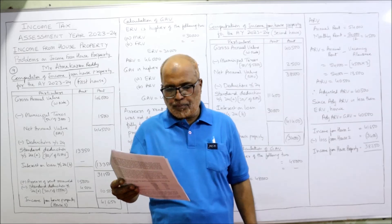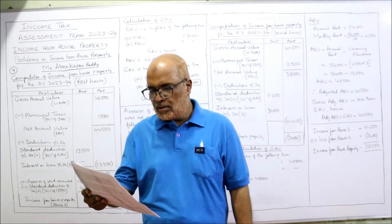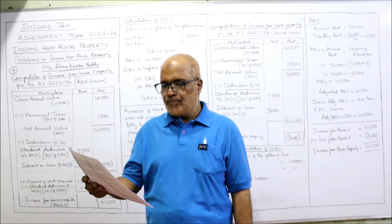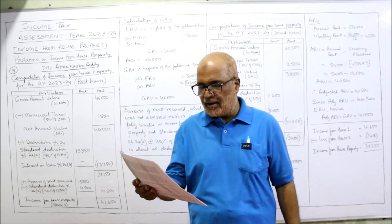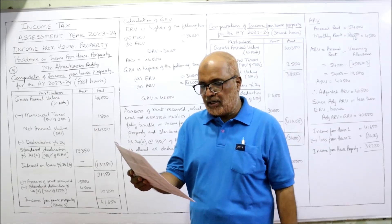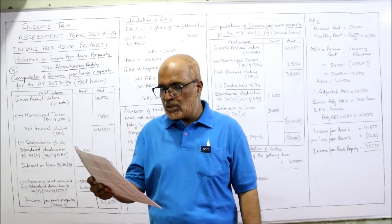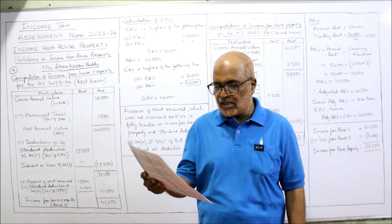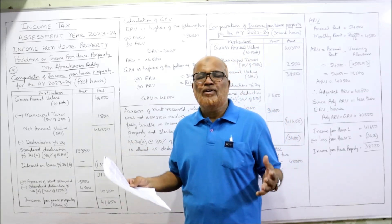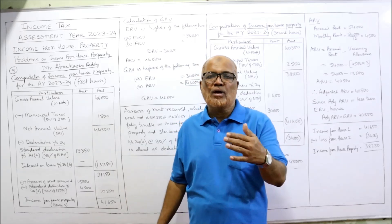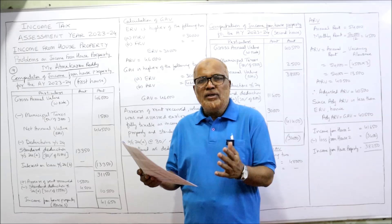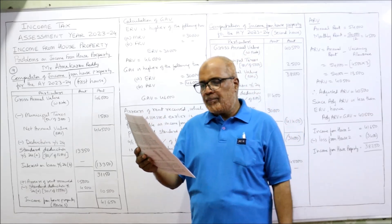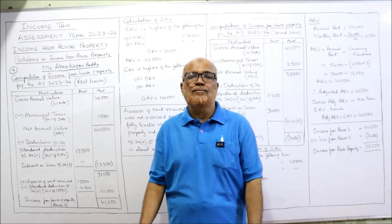Now, the ninth problem: Sri Atmakaran Reddy owns two houses. Their municipal valuation are 30,000 and 48,000. The first house has MRV (municipal rental value) of 30,000 and the second house MRV of 48,000. The first house is let out for residential purpose at 46,000 per annum, and the second house is let out to a company for its registered office at 54,000 per annum. The Income Tax Act says whether the house is let out for residential or commercial purpose, there is no difference at all.